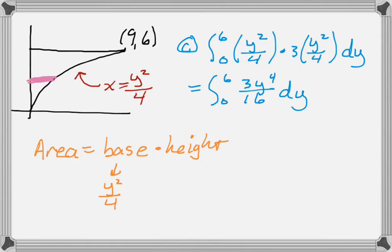And the base in this case is y squared over 4. Because, well, it's right take away left. But the left curve is x equals 0. And then the height is 3 times that. All right. So that's it. Nothing to really be afraid of here. Hope it was helpful. And good luck.